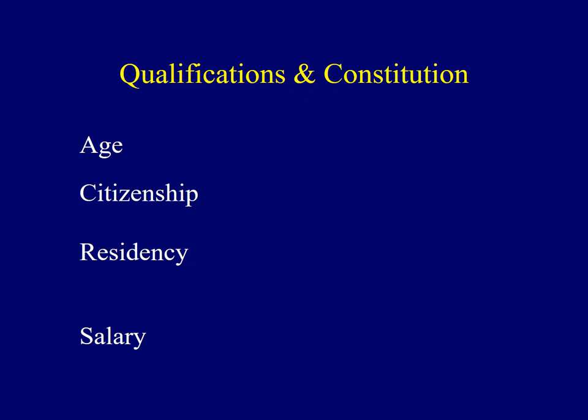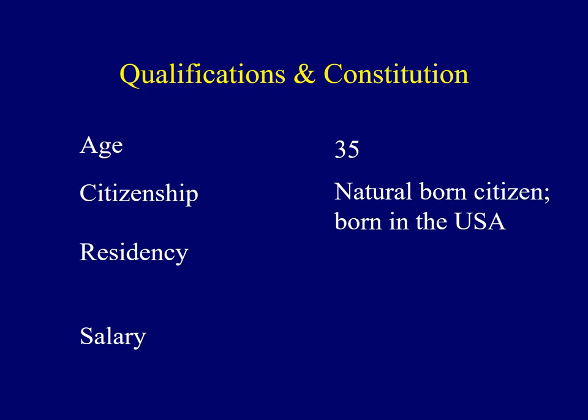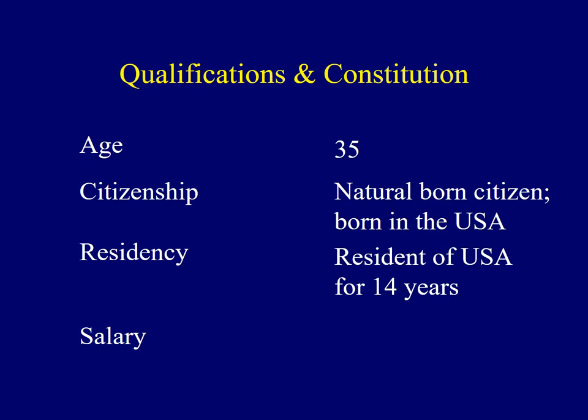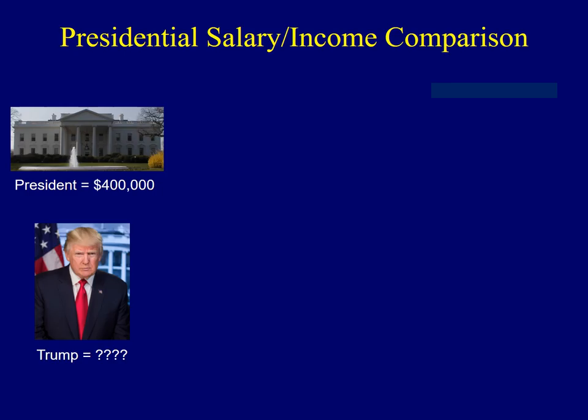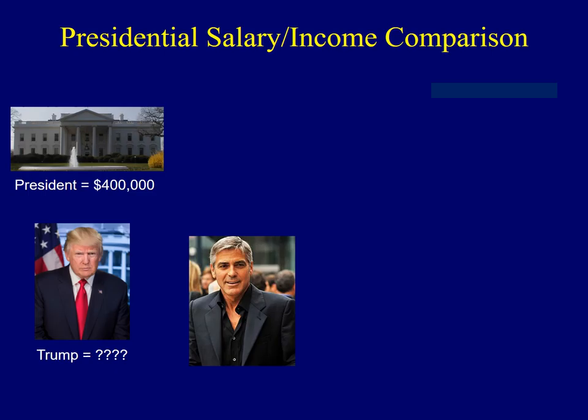Next, we'll explore some of the qualifications in order to serve as President of the United States, as outlined in the Constitution. The Constitution outlines a few qualifications. The first deals with age — one must be at least 35 years old. Also, you have to be a natural born citizen, so a citizen from birth. The easiest way to achieve this is to be born in the United States. There's also a residency requirement: one has to be a resident of the United States for 14 consecutive years prior to running for President.